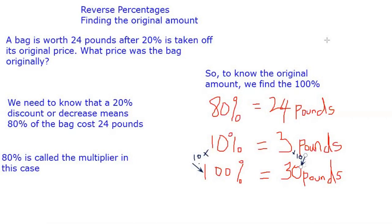A bag is worth 24 pounds after 20% is taken off its original price. What price was the bag originally? We need to know that a 20% discount or decrease means 80% of the bag cost 24 pounds. 80% in this case is called the multiplier.